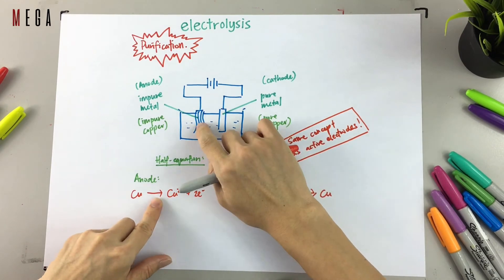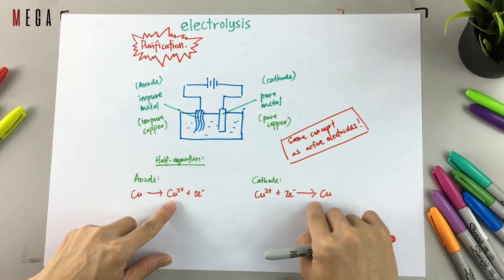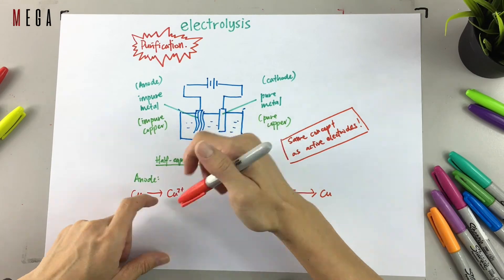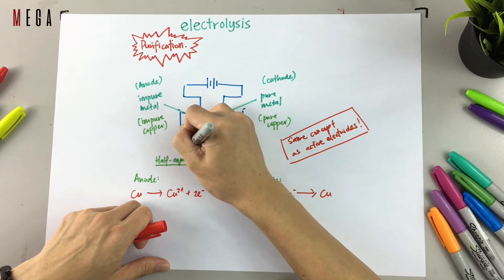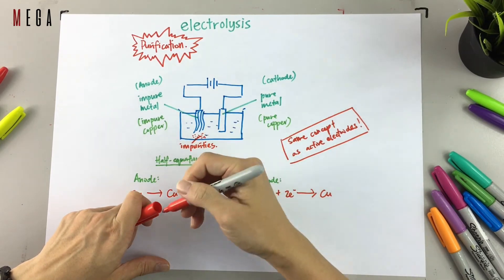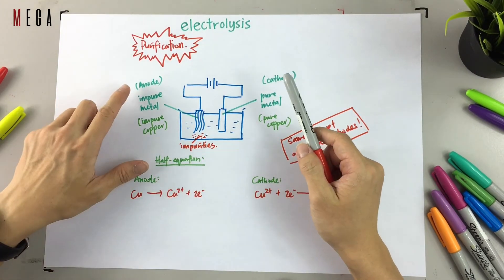See if you notice, equation of anode solid becomes equals ions. Therefore, at the end of the experiment, anode you only left with impurities because all the copper they have moved to cathode.